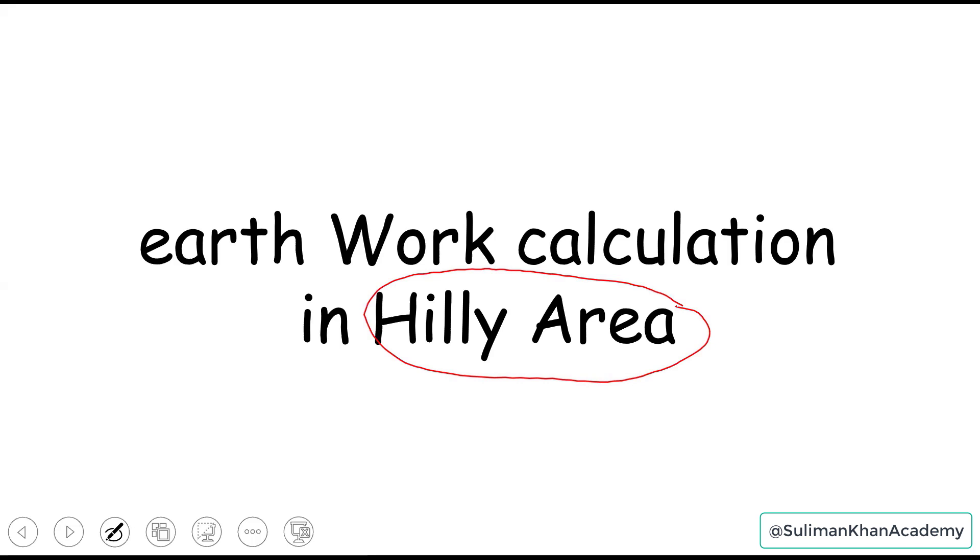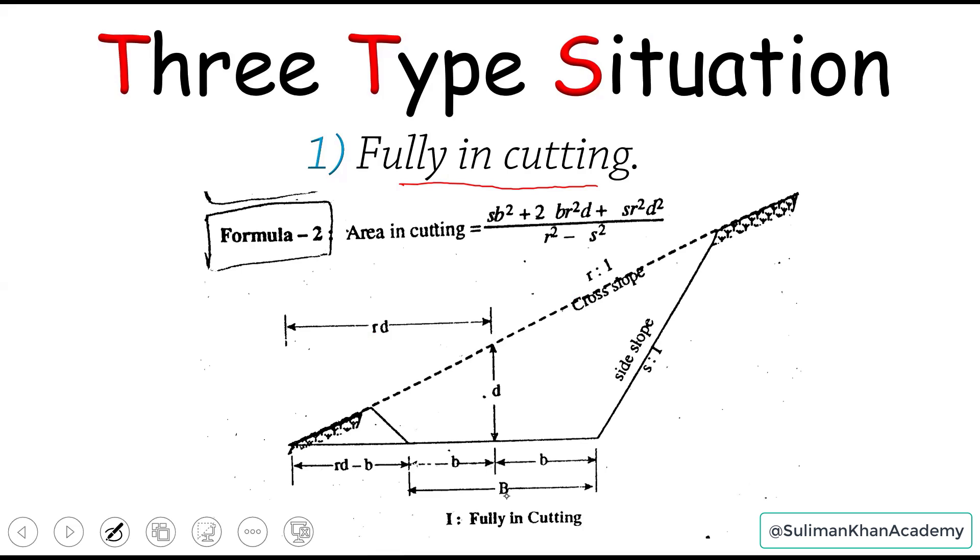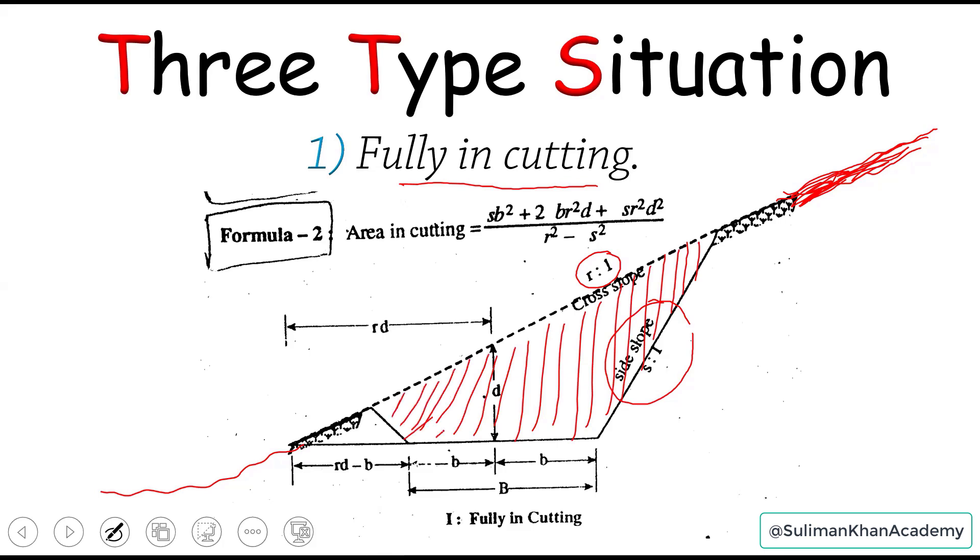There can be different types of conditions. The conditions may include - the earthwork can be in cutting. As you can see, we have the cross slope and this is the natural ground level or the slope formed by the hill or mountain. This is the same slope, and there we have the side slope S ratio 1. Now this area, which is the cutting, which I'm shading in red, this area is the same as shown here. This is area in cutting. And this formula can be used to determine this area.